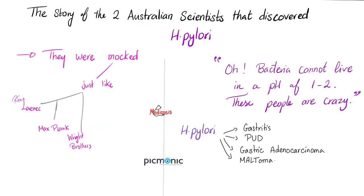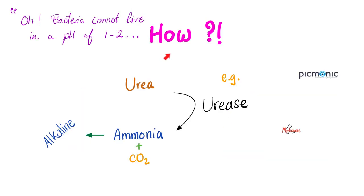For most of human history, people thought no bacteria could live in the stomach because it is so acidic. Until two Australian scientists argued otherwise — and they were proven right. How can H. pylori tolerate the extreme acidity? Because H. pylori has the urease enzyme, which converts urea into ammonia. Ammonia is slightly alkaline, so the H. pylori is protected within an alkaline bubble inside your stomach. That's why urease is very important for H. pylori. The stomach cell that secretes acid is the parietal cell, which also secretes intrinsic factor to help absorb vitamin B12.